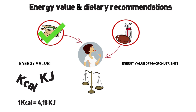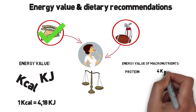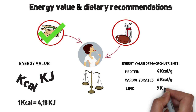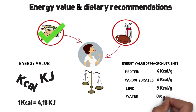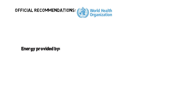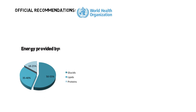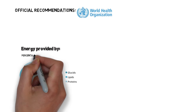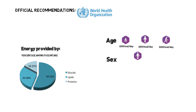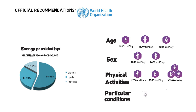Macronutrients have different energy values. Protein and carbohydrate provide 4 calories per gram, while lipid provides 9 kilocalories per gram. According to the official recommendations, energy should be provided 50 to 55% by carbohydrate, 35 to 40% by lipids, and 18 to 25% from proteins. Energy requirements vary depending upon age, sex, size, metabolic rate, and activity level.